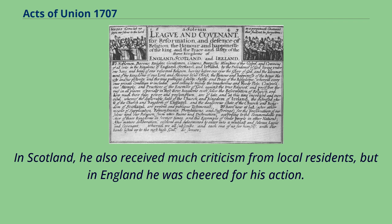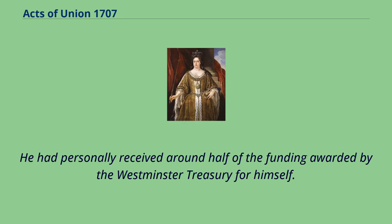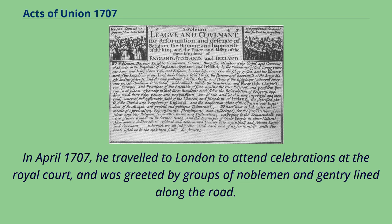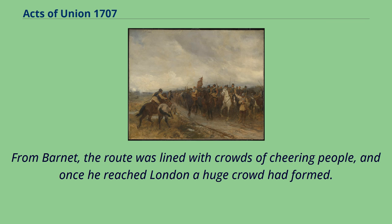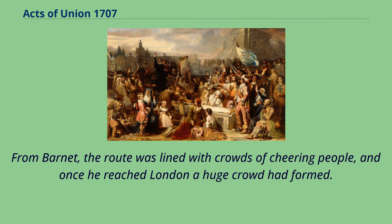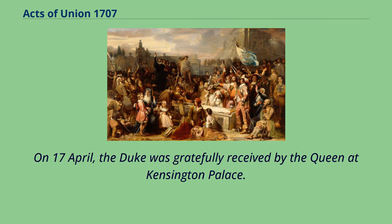Queensbury had personally received around half of the funding awarded by the Westminster Treasury for himself. In April 1707, he travelled to London to attend celebrations at the Royal Court and was greeted by groups of noblemen and gentry lined along the road. From Barnet, the route was lined with crowds of cheering people, and once he reached London a huge crowd had formed. On 17 April, the Duke was gratefully received by the Queen at Kensington Palace.